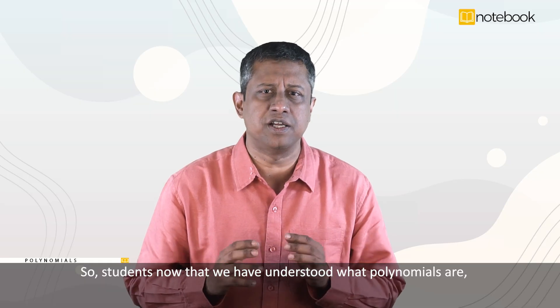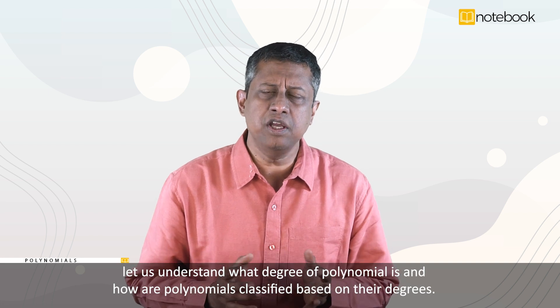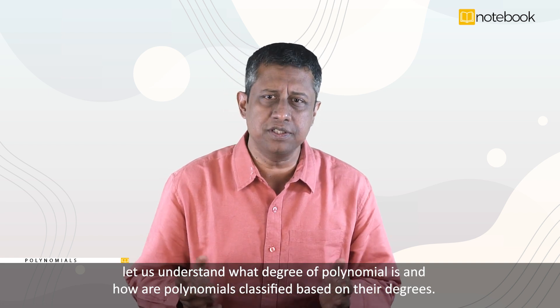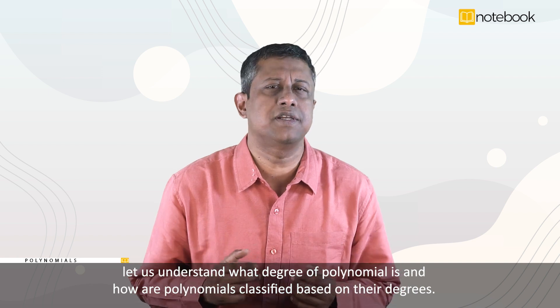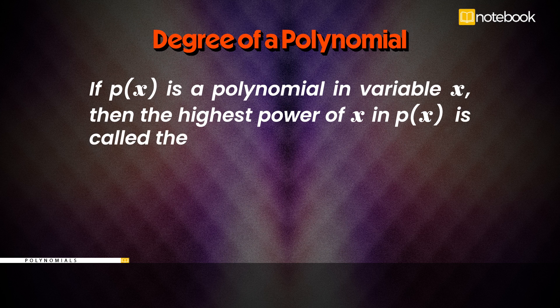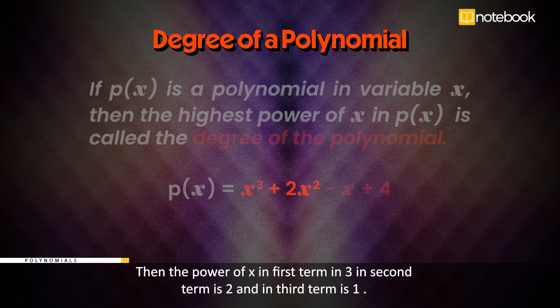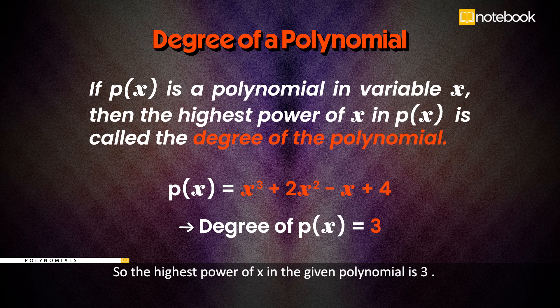Now that we have understood what polynomials are, let us understand what the degree of a polynomial is and how polynomials are classified based on their degrees. If p(x) is a polynomial in variable x, then the highest power of x in p(x) is called the degree of the polynomial. For example, if p(x) = x³ + 2x² − x + 4, the power of x in the first term is 3, in the second term is 2, and in the third term is 1. So the highest power of x is 3, and therefore this is a polynomial of degree 3.